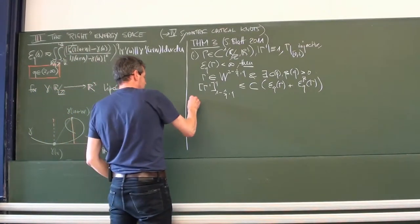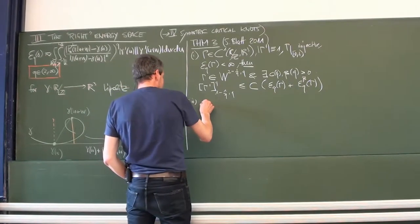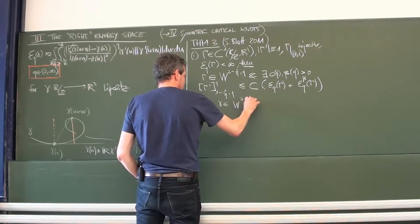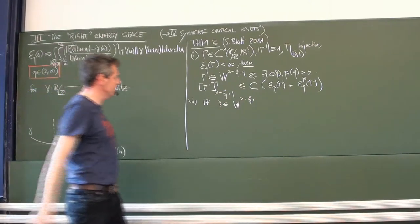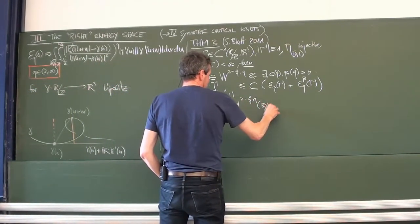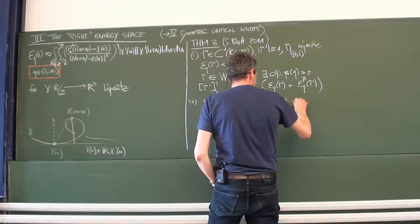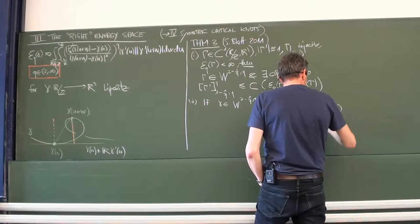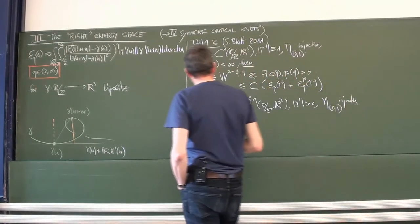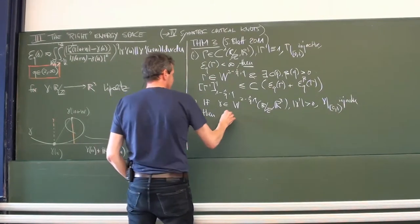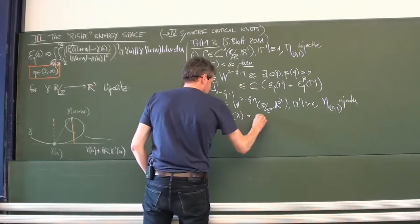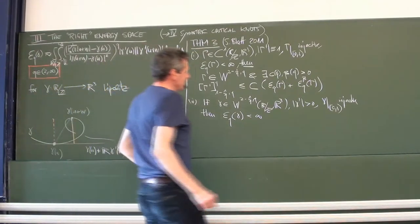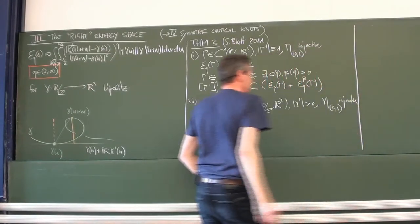The second part: if you take a curve gamma, not necessarily arc-length parameterized, in that Sobolev-Slobodetsky space with period 1, and if it is regular (velocity positive) and injective on [0,1], then one can prove the energy is finite. So it goes both ways — only that for the first part I need a good parameterization already. This theorem tells you what is the right space where the energy is finite, and vice versa.